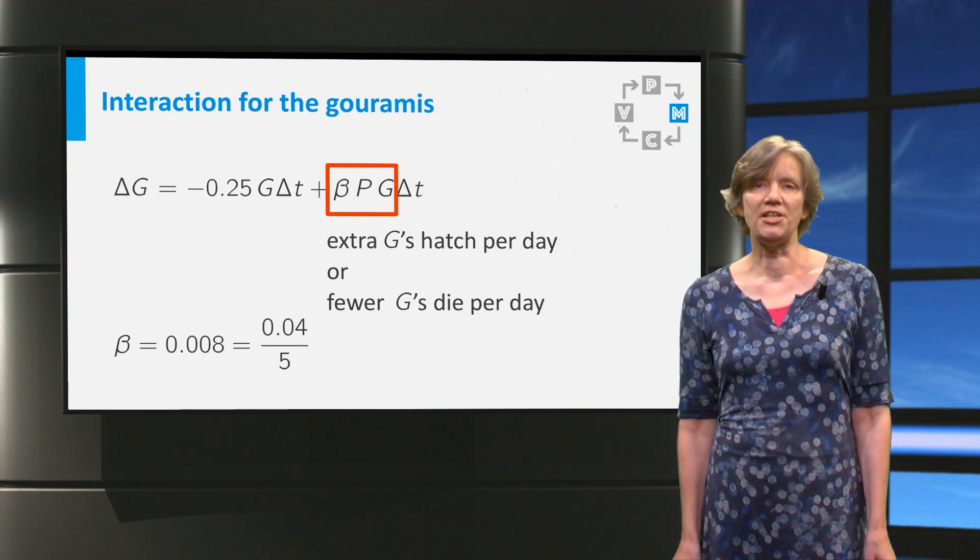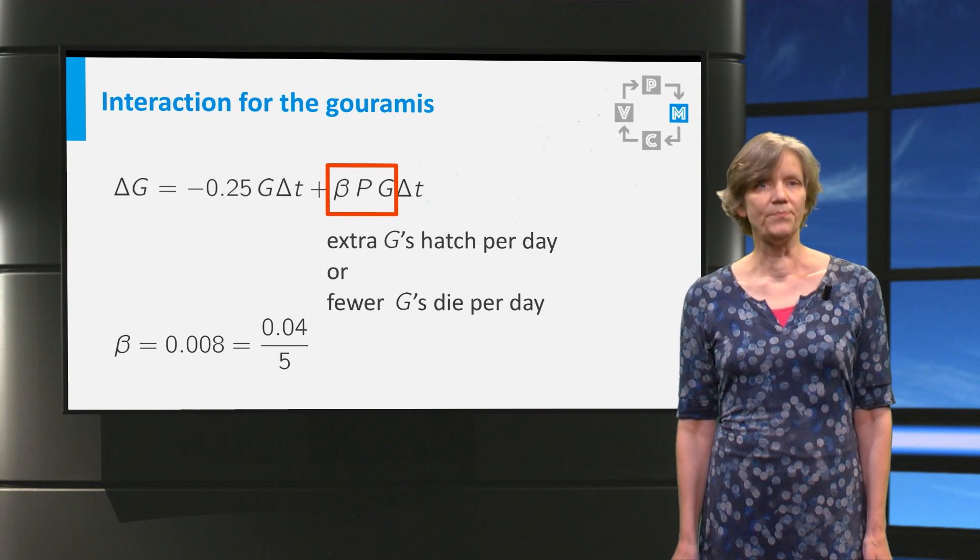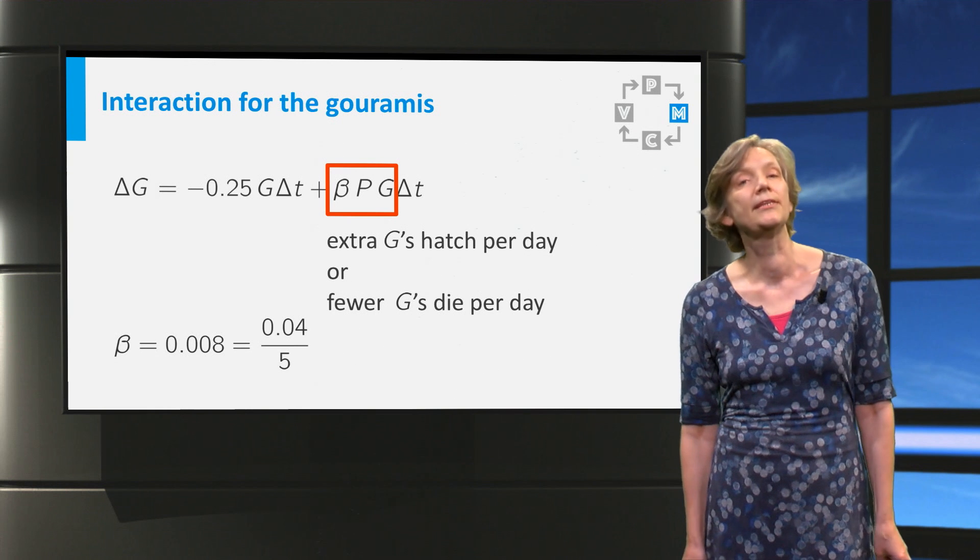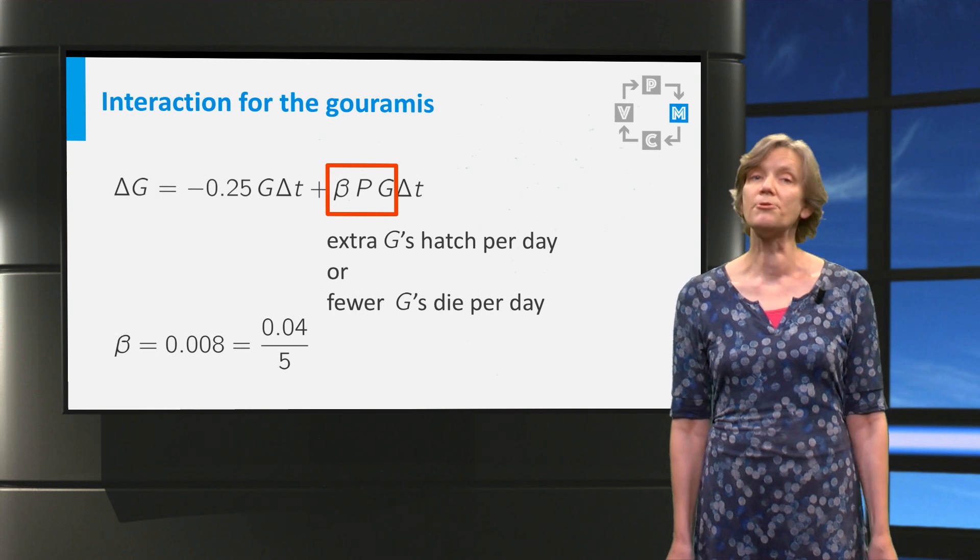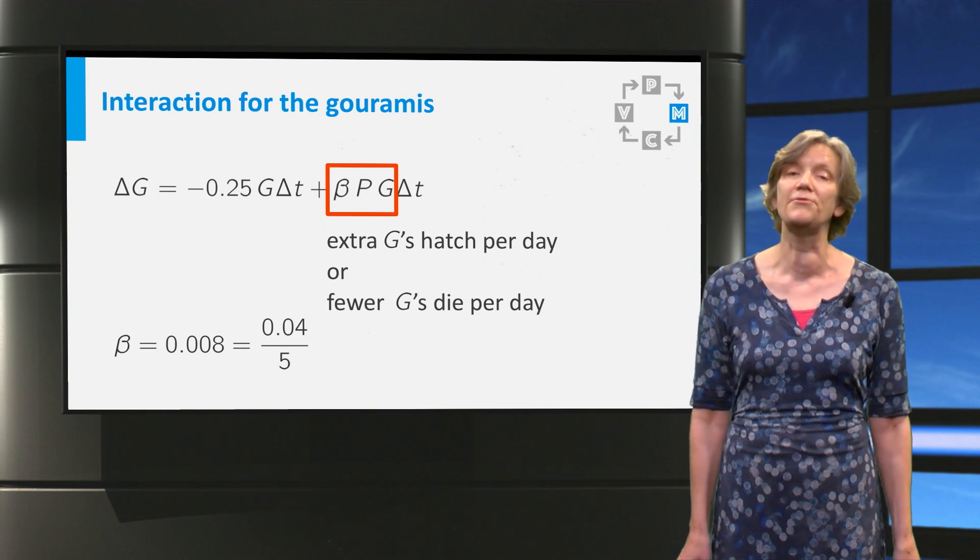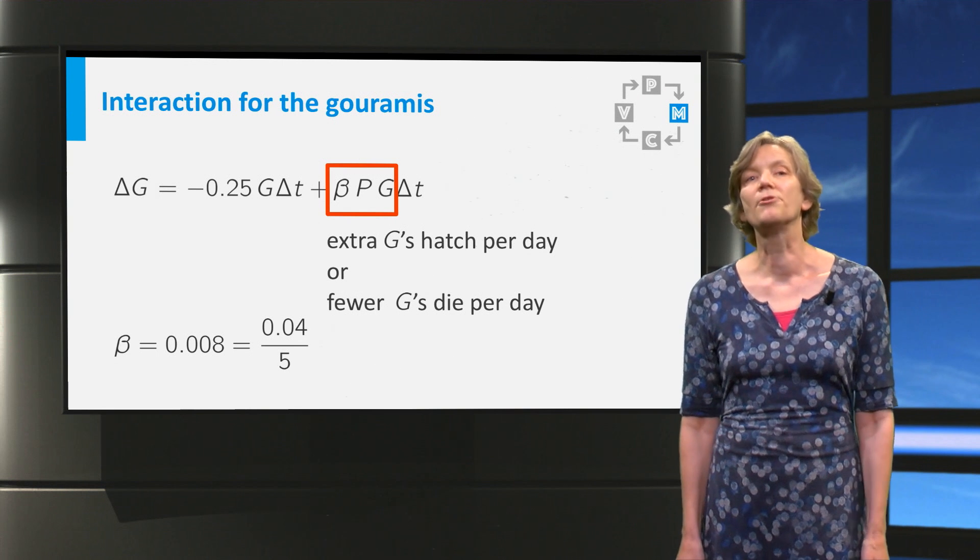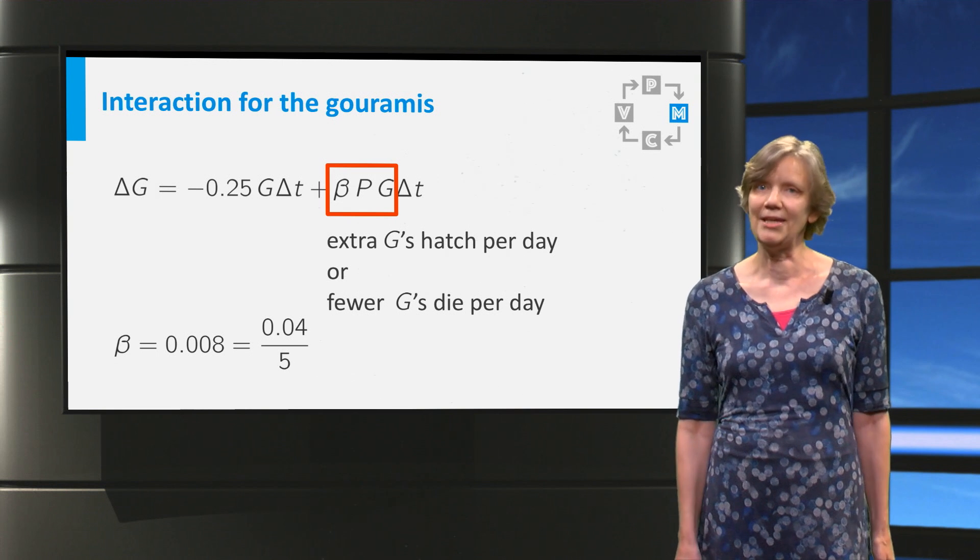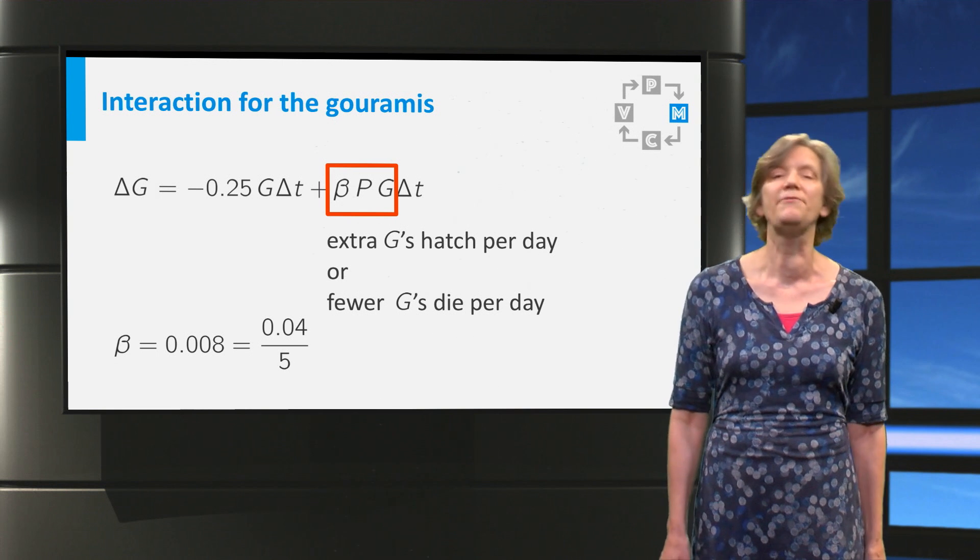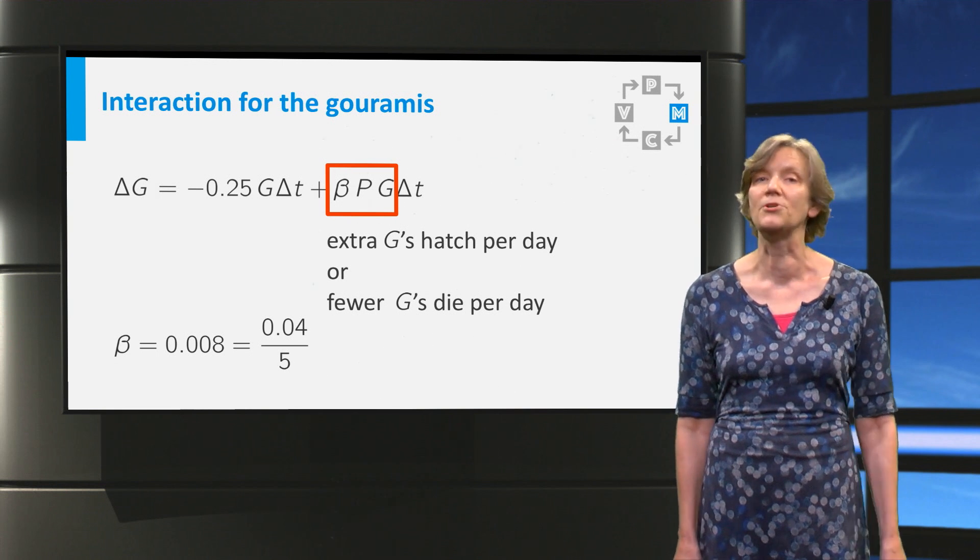We set the value of beta at 0.008. You can interpret that as follows. Each gourami eats 4% of the rainbow fish each day. And for every 5 rainbow fish that the gourami eats, one extra gourami is gained. 4% divided by 5 equals 0.008.